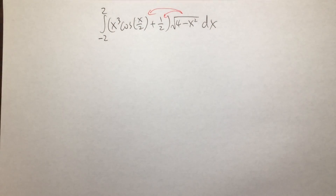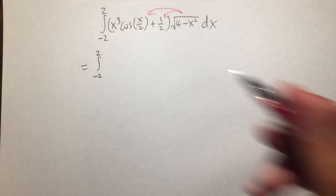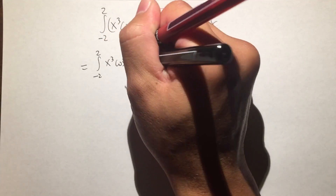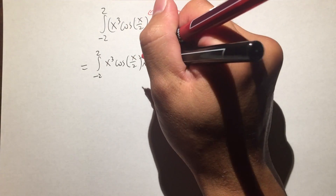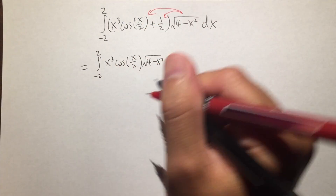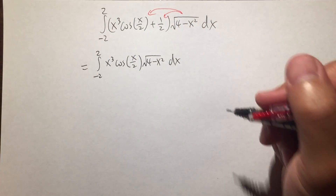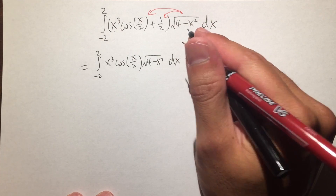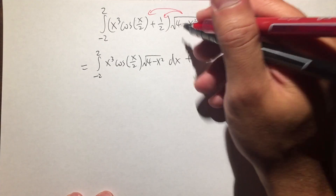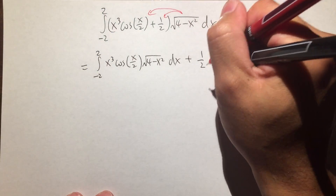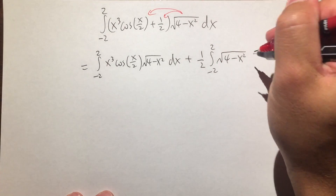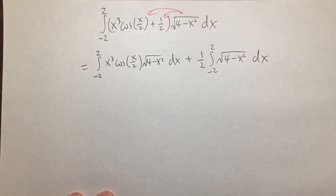For the first one, we will have the integral from negative 2 to 2 — this times that — so let's write down x to the third power times cosine of x over 2 times the square root of 4 minus x squared, with dx here. Then next I will add one half times that integral, and since one half is a constant multiple I can write that first, then the integral from negative 2 to 2 of the square root of 4 minus x squared dx.